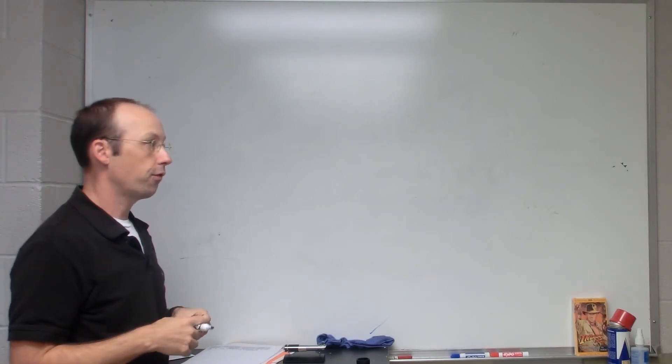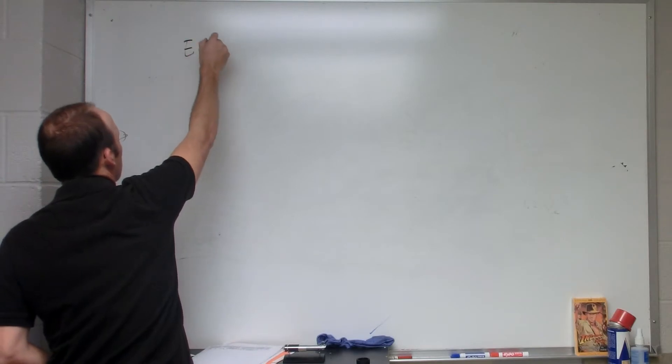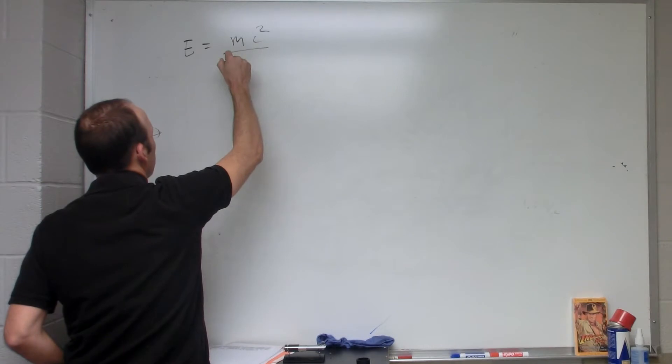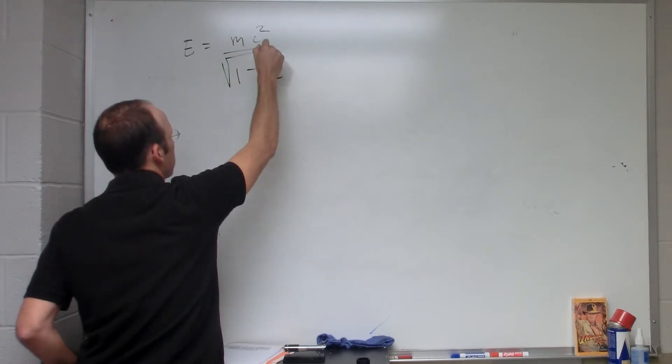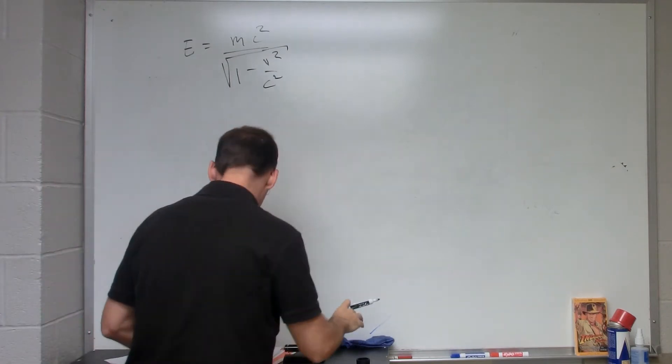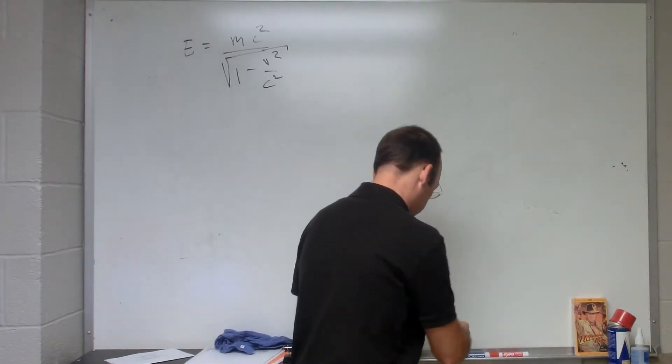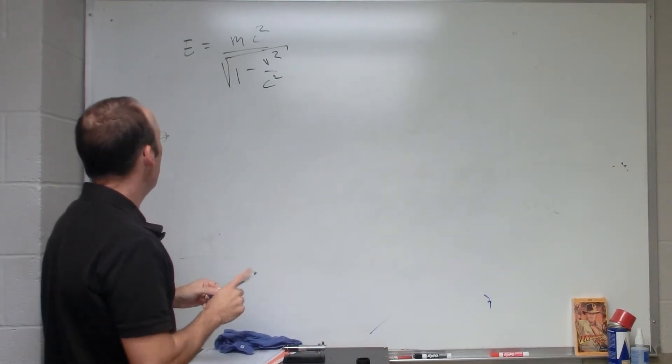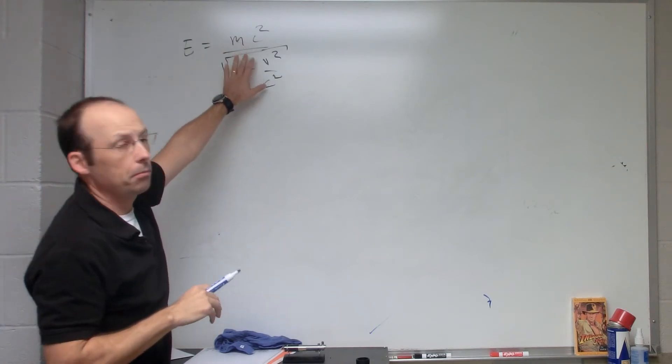So first, what is energy? For a particle we say the energy is mc squared over the square root of one minus v squared over c squared. That's the particle energy. Now, you'll notice that this has what people typically call mass energy and kinetic energy combined.